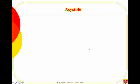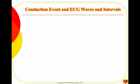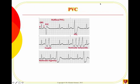Asystole is a straight line — no contraction, no heart rate, no ventricular activity. Sometimes you can see what looks like electrical activity, which is called pulseless electrical activity, or PEA. The patient is unconscious, there is no heart rate and no pulse, but there is some electrical activity visible on the monitor.